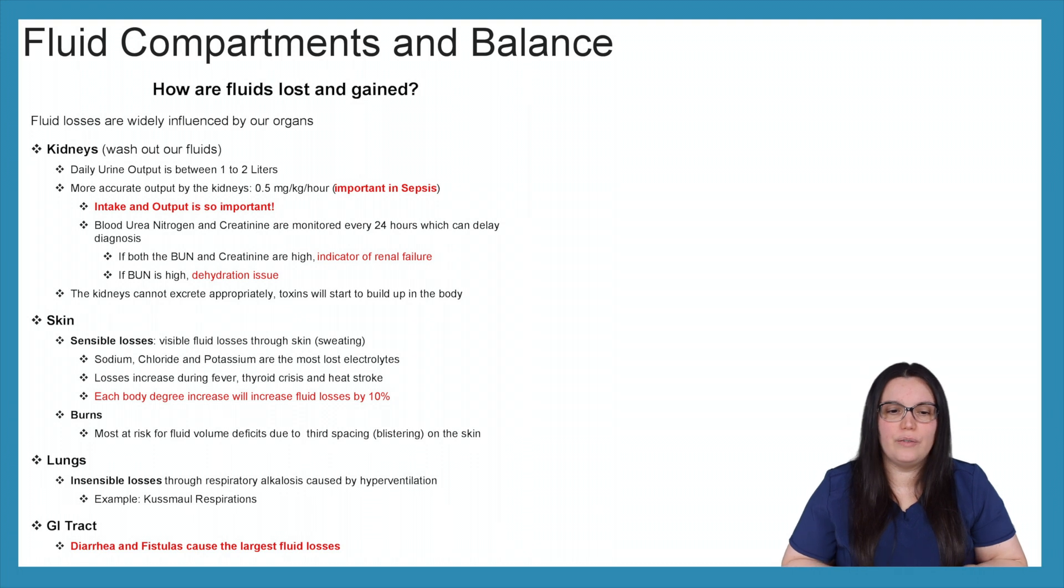Next, we have our skin. So we have two different kinds of losses. We have sensible losses and insensible losses like we see with our lungs. So with sensible losses, these are losses that can be perceived or sensed. They can be measured. You've lost it. You know you've lost it. So when it comes to sensible losses with our skin, one of the big things that you think about is sweating. Those are visible fluid losses through our skin. Inside that sweat, we have sodium, chloride, and potassium are the biggest electrolytes that are lost. Losses increase during fever, thyroid crisis, as well as heat stroke.